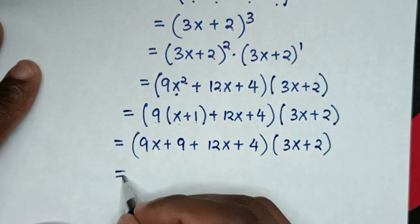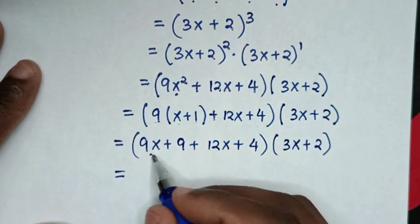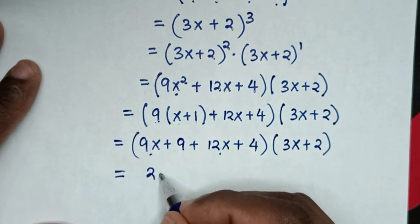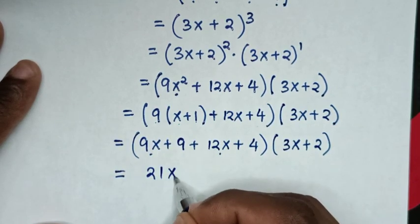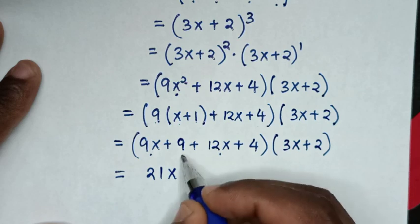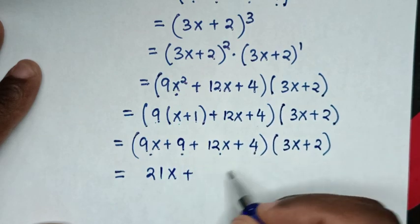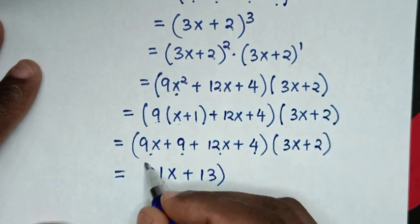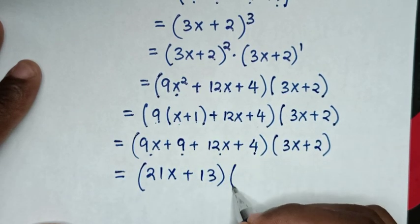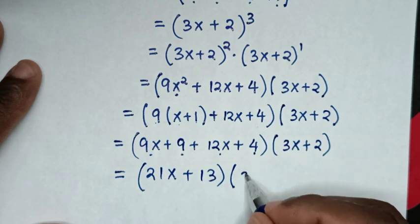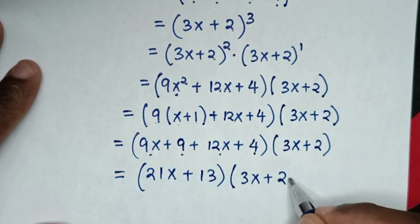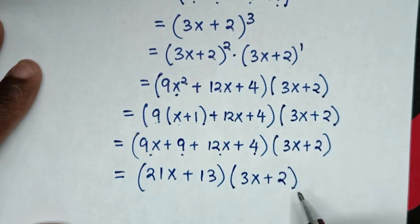Then it will be equal to (9x plus 9 plus 12x plus 4) bracket times (3x plus 2) bracket.